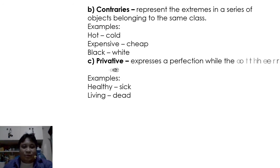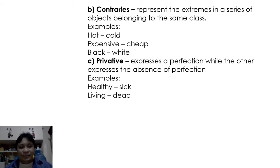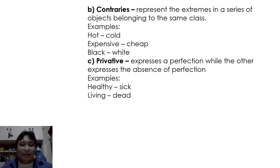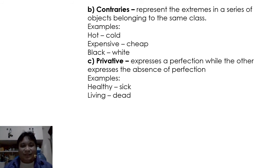Privative terms are where one expresses a perfection while the other expresses the absence of that perfection. For example: healthy and sick, living and dead. Good and evil are not contraries — evil is defined as the absence of good, which is the perfection, so good and evil are privative terms. Another example: full and empty — 'empty' is the absence of the perfection of being full. These are all privative terms.